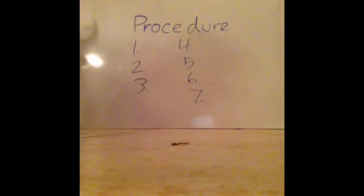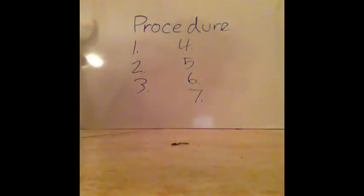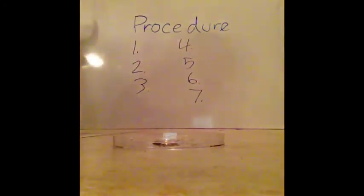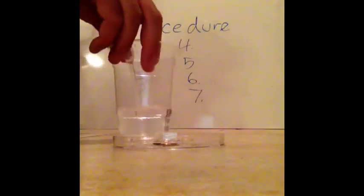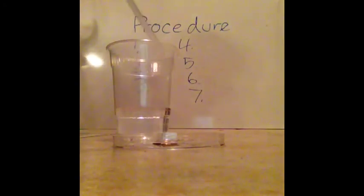For your procedure, you need to make sure you number each step. Keep it organized. How are you going to do this? How are you going to set it up? You're going to put the penny in the petri dish. What are you going to do? How are you going to get the water out of the cup, into the pipette, and onto the penny? You need to decide.